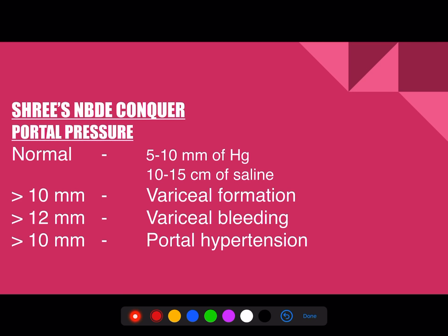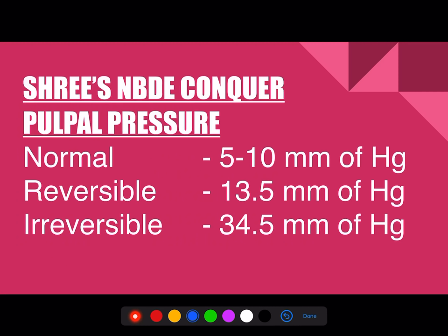Portal vein pressures: the normal is 5–10 mmHg or 10–15 cm of saline. Whenever it is more than 10 mmHg, variceal formation occurs. Whenever it is more than 12 mmHg, variceal bleeding occurs. More than 10 mmHg is considered portal hypertension.